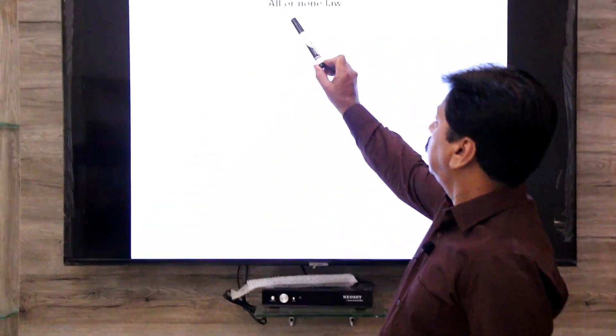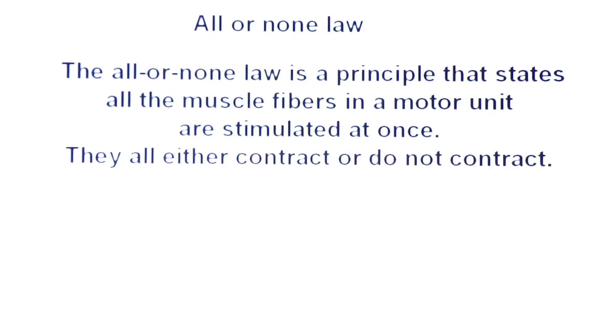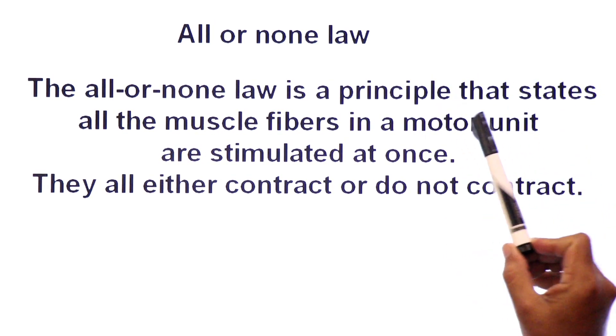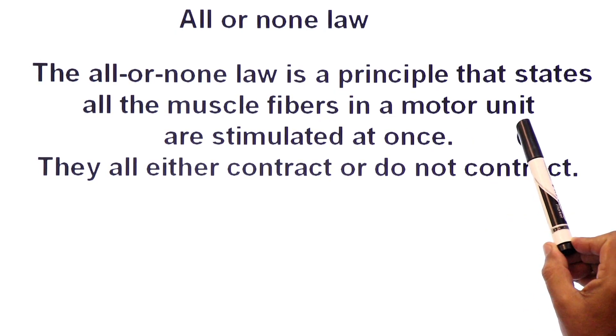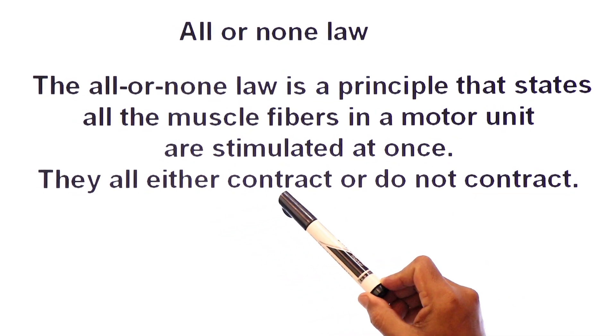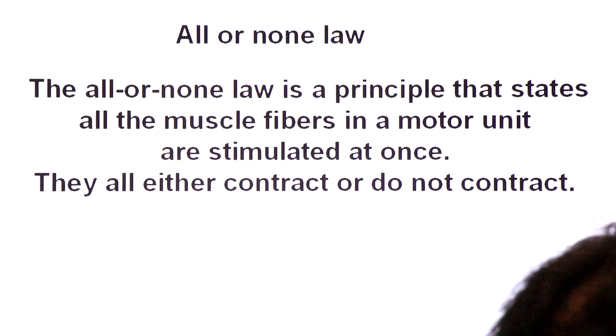Hello dear students, welcome back to Inter Biology classes of some academy. Today we are going to talk about the All or None Law. The All or None Law is a principle that states all the muscle fibers in a motor unit are stimulated at once — they all either contract or do not contract. This is called All or None Law.